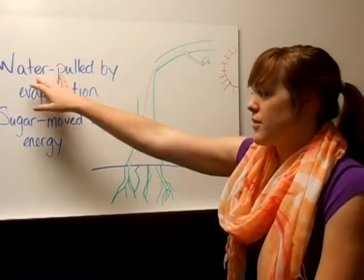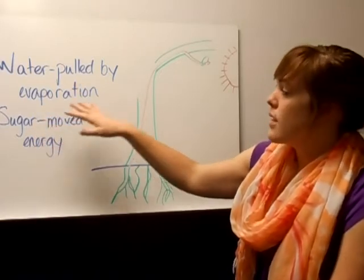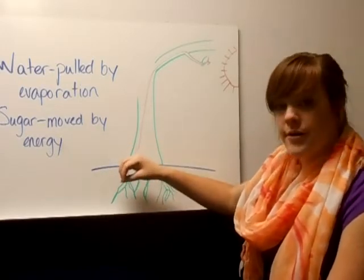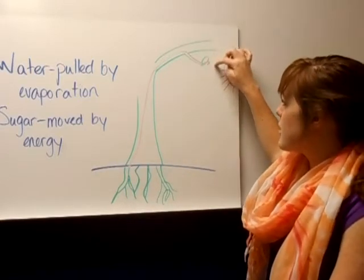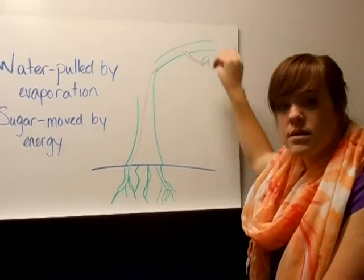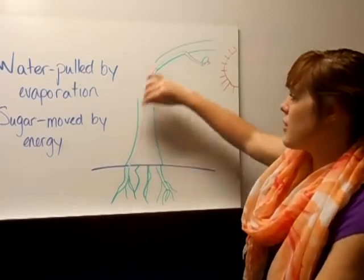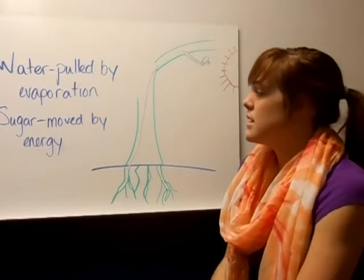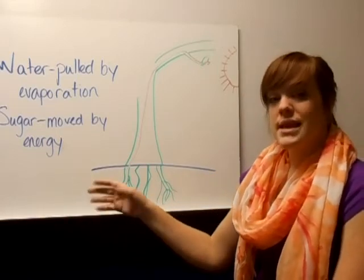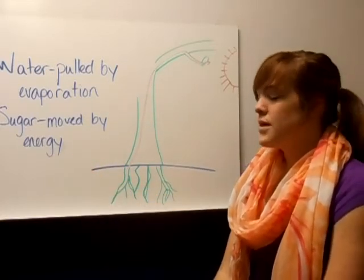The two things that are moved are water and minerals in the xylem, and sugar in the phloem. The water is actually pulled up by evaporation — there's no energy needed. The roots absorb the water, and the leaves are exposed to the sun. When the water in the leaves evaporates, it pulls water all the way up from the roots, because water likes to stick to each other, pulling other water molecules up and out to the very tips of the plant. Sugar, however, needs the energy created in photosynthesis to actually move. You need to know that water is pulled by evaporation to the leaves and that sugar is moved by energy.